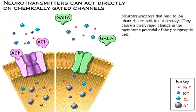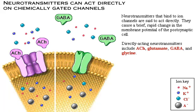Neurotransmitters that bind to ion channels are said to act directly. They cause a brief, rapid change in the membrane potential of the postsynaptic cell. Directly acting neurotransmitters include acetylcholine, glutamate, GABA, and glycine.